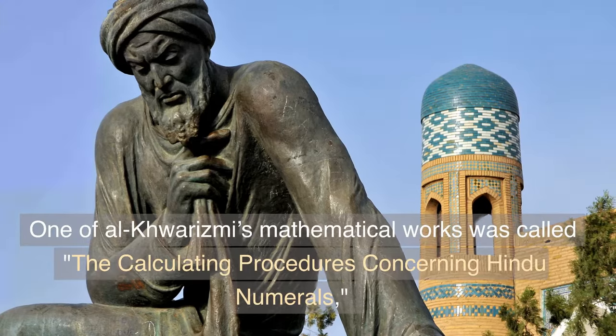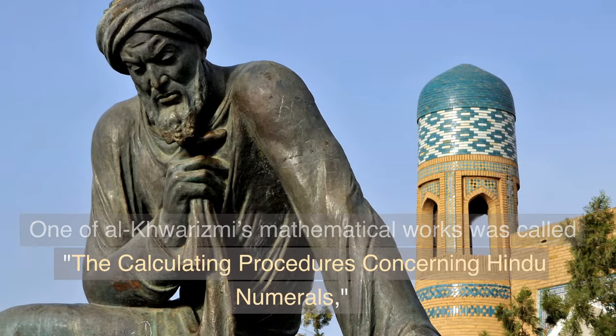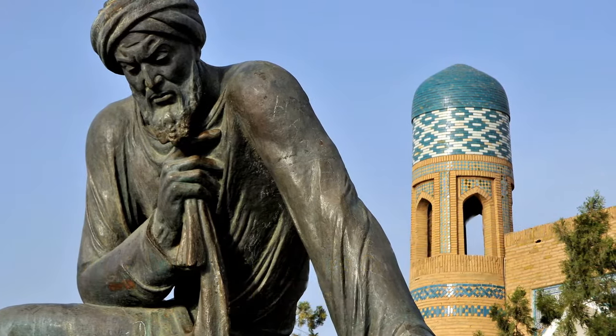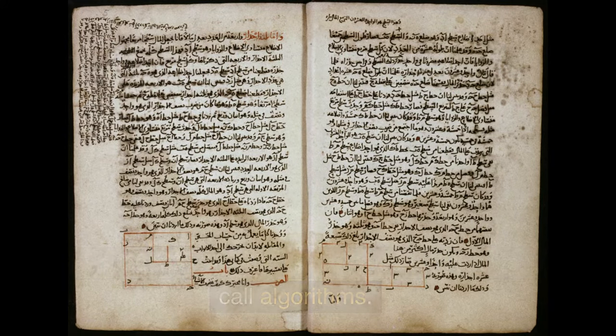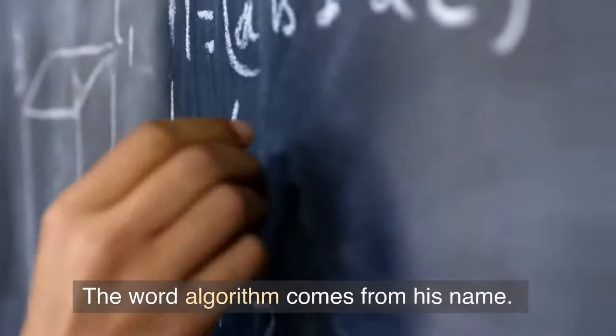One of Al-Khwarizmi's mathematical works was called The Calculating Procedures Concerning Hindu Numerals, which presented the first known use of what we now call algorithms. The word algorithm comes from his name.